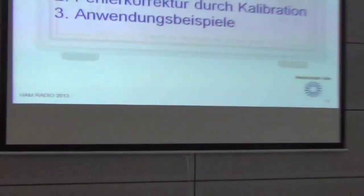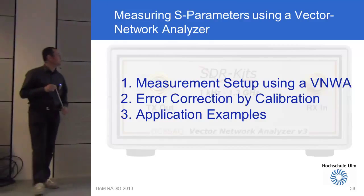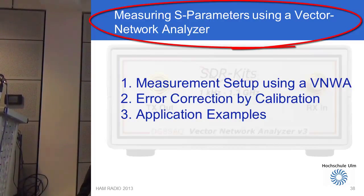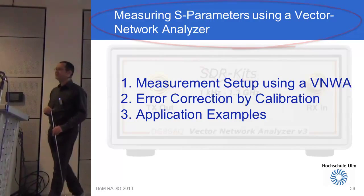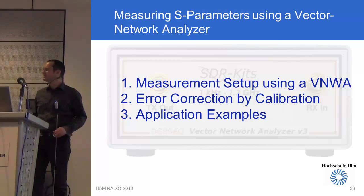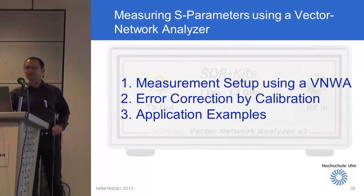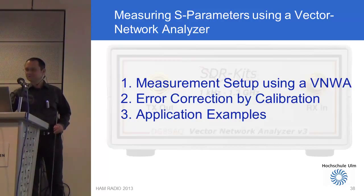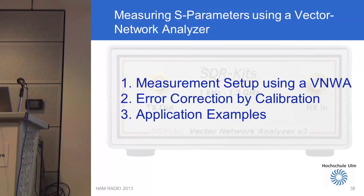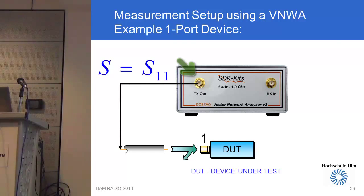We are now continuing with some practical demonstrations, starting with how to measure S-parameters with a Vector Network Analyzer. Doing measurements with my VNWA is, in general terms, identical to performing measurements with any other brand of VNA. The measurement demonstrated here is identical to measurement with a VNA from Agilent, Rohde & Schwarz, or any other manufacturer — there is no difference. My equipment has one output, the TX port, and one input, the RX port.